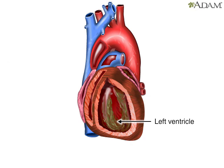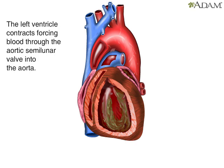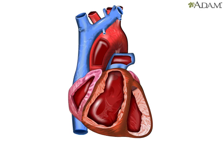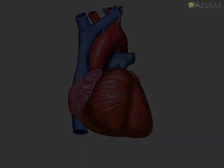The left ventricle is the muscular pump that sends blood out to the rest of the body. When it contracts, it forces blood through the aortic semilunar valve and into the aorta. The aorta and its branches carry the blood to all the body's tissues.